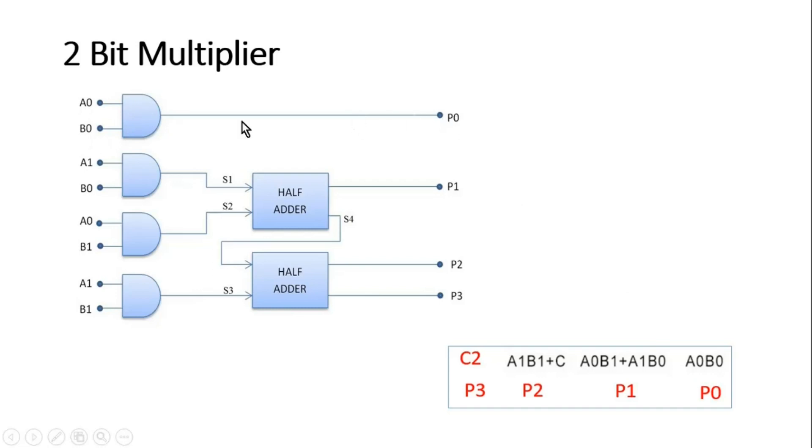P1: P1 is equal to A0 into B1 plus A1 into B0. A0 into B1, this AND gate. A1 into B0, A1 into B0, this AND gate. Then we need to add both of them and I am using half adder here.